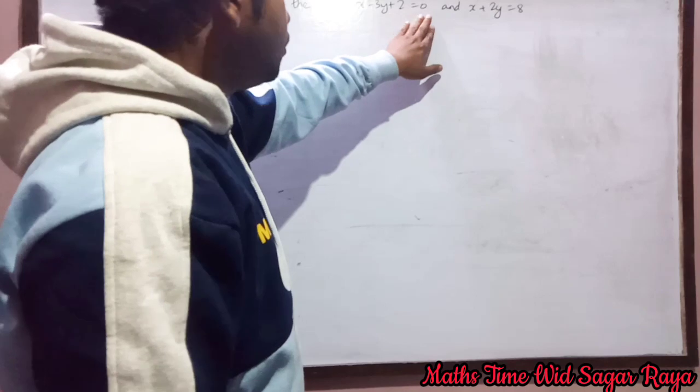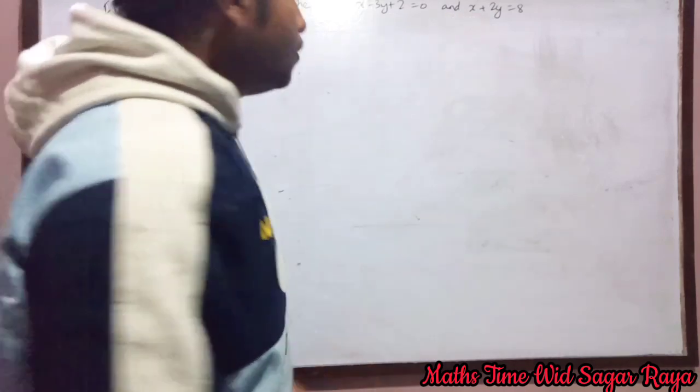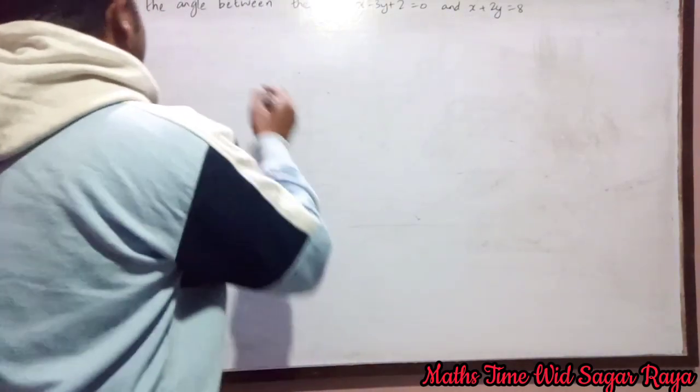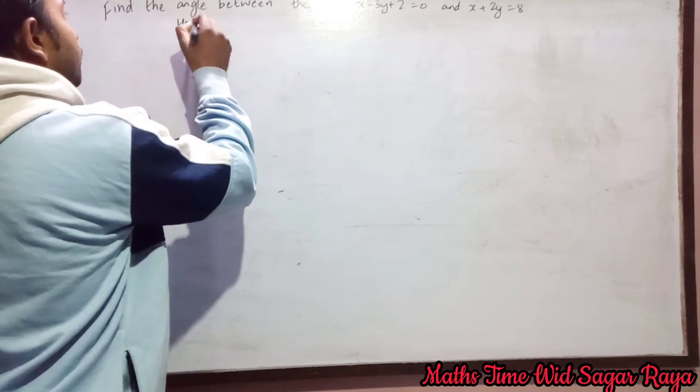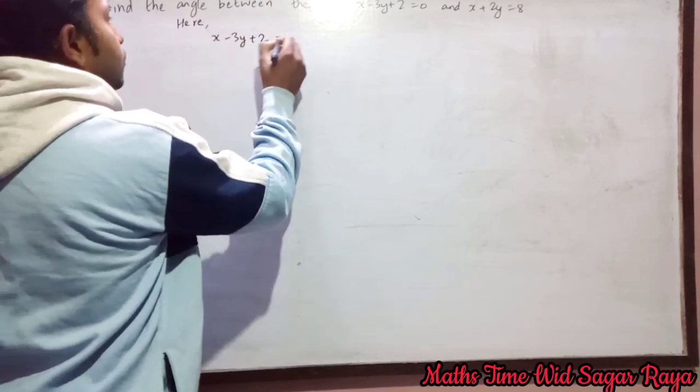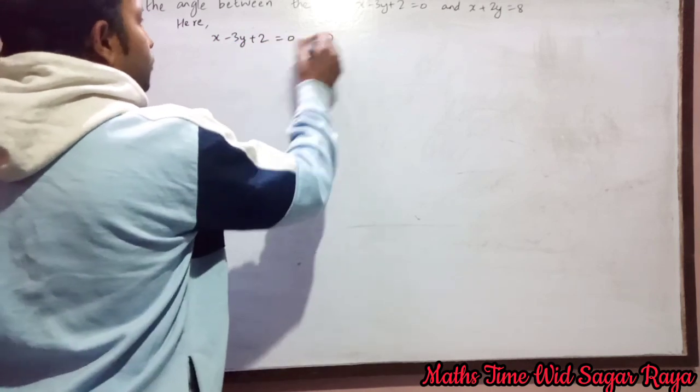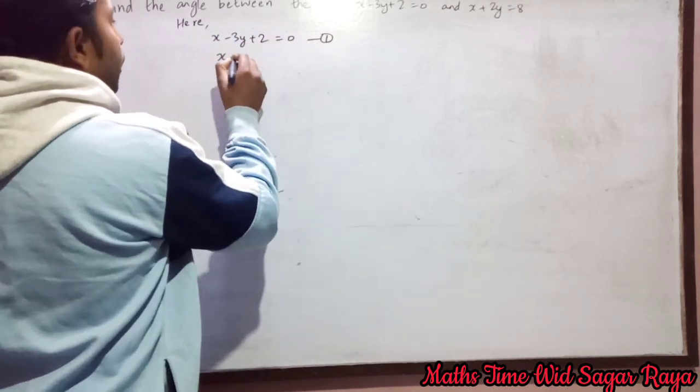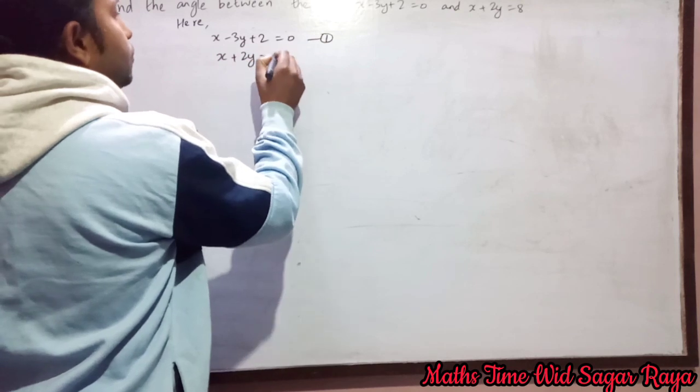...and x plus 2y equal to 8. So here x minus 3y plus 2 equal to 0, let it be equation 1, and x plus 2y equal to 8, equation 2.